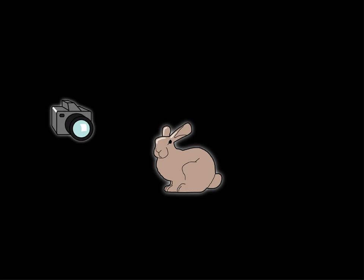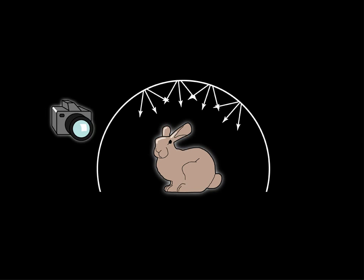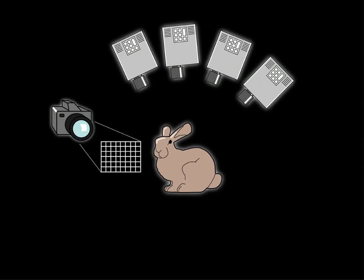One area that has gained interest in the past few years is relighting with 4D incident light fields. To do this, we must capture the six-dimensional reflectance function that relates 4D incident illumination to our 2D output image. Traditionally, this can be done by measuring the transfer between a single camera and an array of projectors.